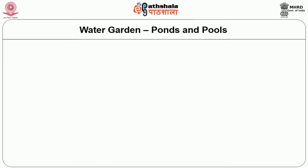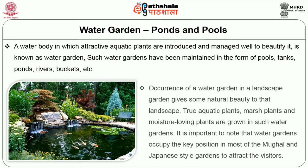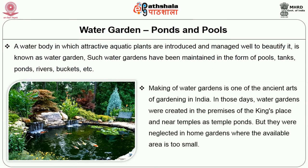A water body in which attractive aquatic plants are introduced and managed well to beautify it is known as a water garden. Water gardens have been maintained in the form of pools, tanks, ponds, rivers, buckets, etc. Their occurrence in landscape gardens adds natural beauty to the landscape. True aquatic plants, marsh plants and moisture-loving plants are grown in water gardens. It is important to note that water gardens occupy the key position in most Mughal and Japanese style gardens to attract visitors. Making a water garden is one of the ancient arts of gardening in India — in earlier times, water gardens were created in the premises of kings' palaces and near temples as temple ponds.